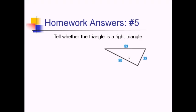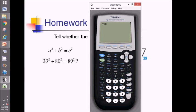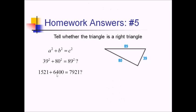Number five, we're trying to figure out if this is a right triangle. We will use the Pythagorean theorem to decipher this. For my C value, that's going to be the longest side, so 89 squared. We're checking if 39 squared plus 80 squared adds up to that. 39 squared is 1521 and 80 squared is 6,400; 89 squared is 7,921. Does 1521 plus 6,400 equal 7,921? It does — so this is a right triangle.